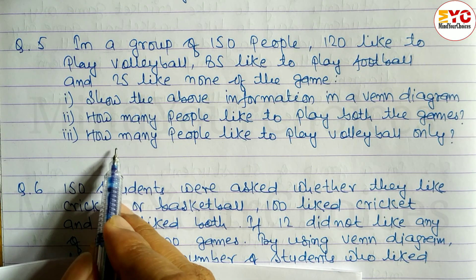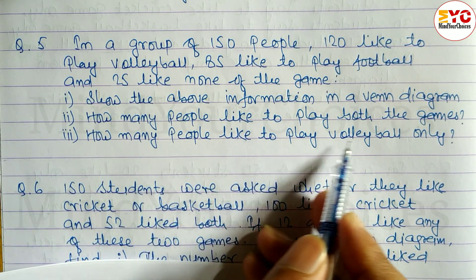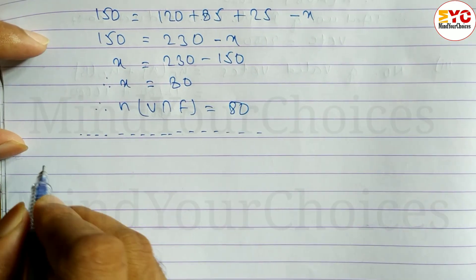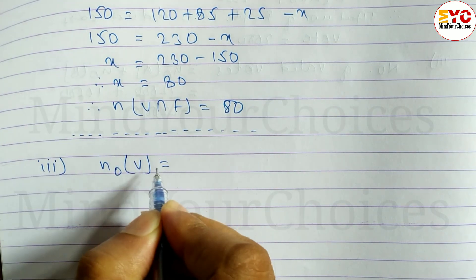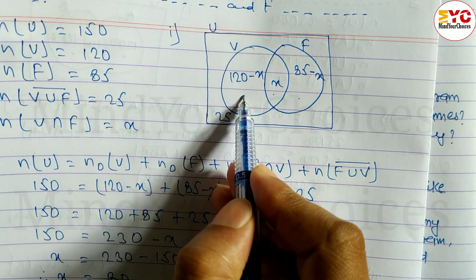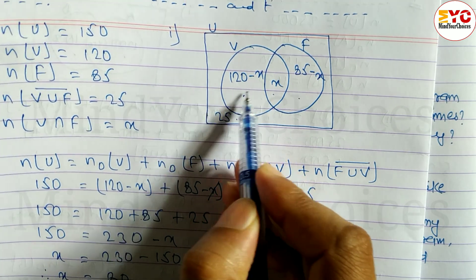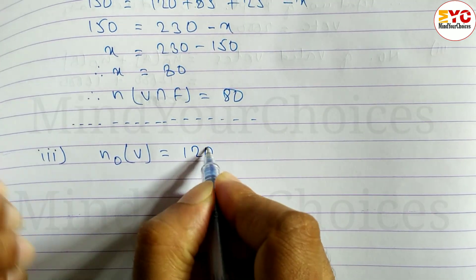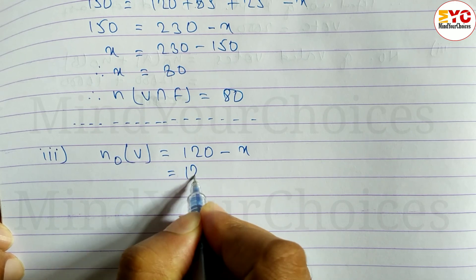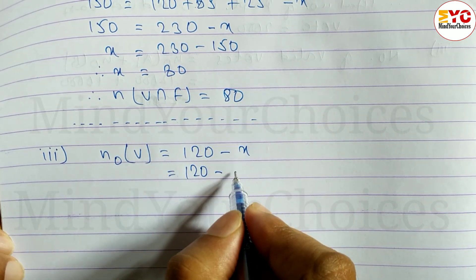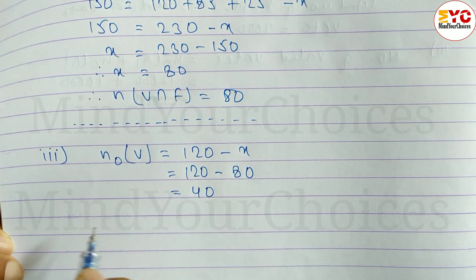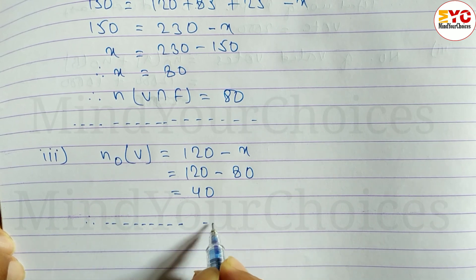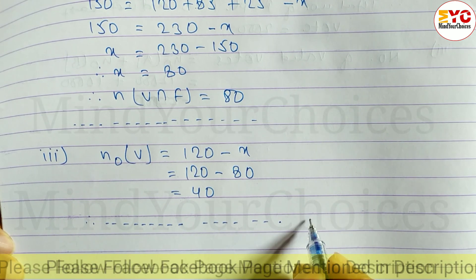For number 3, we have to find how many people like to play volleyball only. N(only B) = 120 − X. Since X = 80, we get 120 − 80 = 40. Hence, 40 people like to play the volleyball game only.